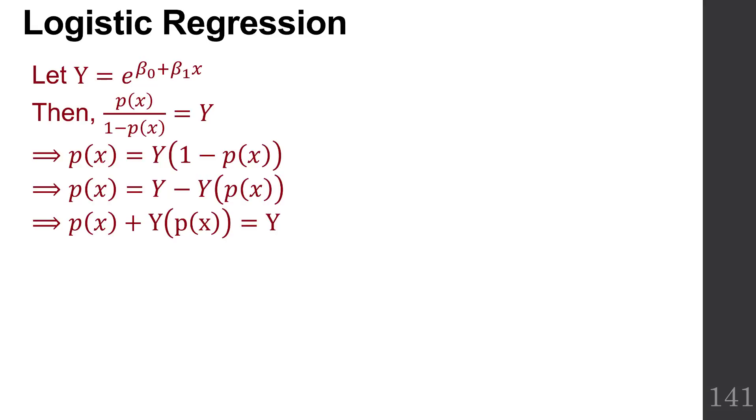Add it to both sides so it shows up on the left and goes away on the right. Then we're going to factor out the p on the left, so we have p times 1 plus y. And then we divide both sides by 1 plus y. So that's just a little demonstration that we can write these things in terms of the probability instead of the odds.